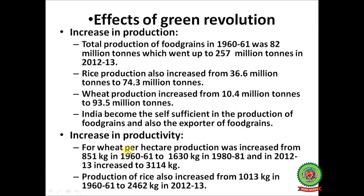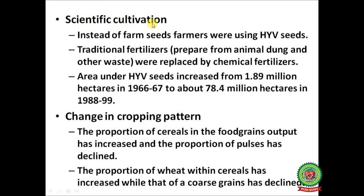Increase in productivity: for wheat, per hectare production increased from 851 kg in 1960–61 to 1,630 kg in 1980–81, and further to 3,114 kg in 2012–13. Production of rice also increased from 1,013 kg in 1960–61 to 2,462 kg in 2012–13. Scientific cultivation: farmers shifted from farm seeds to HYV seeds, and traditional fertilizers made from animal dung were replaced by chemical fertilizers. Area under HYV seeds increased from 1.89 million hectares in 1966–67 to about 78.4 million hectares in 1988–89.